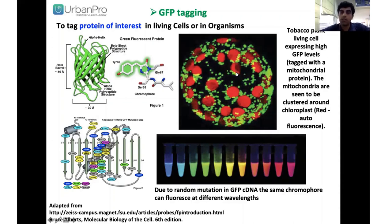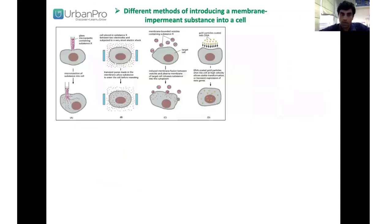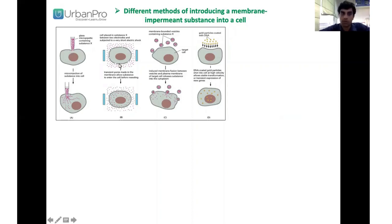The red color shows autofluorescence from the chloroplast. There are different methods to introduce a membrane-permeable substance into the cell. One technique is glass microinjection, another is electroporation, another involves lipid membrane-bound vesicles interacting with the plasma membrane, and another technique uses gold particles which can be inserted into the cell.